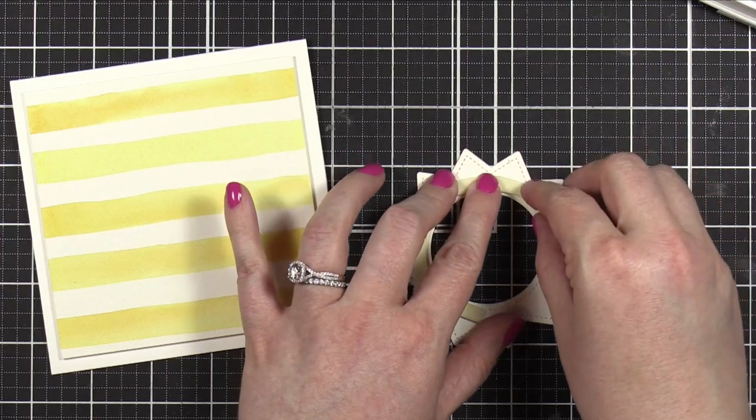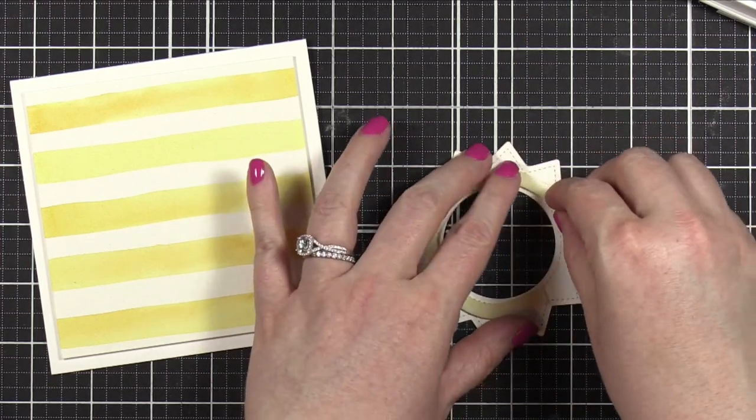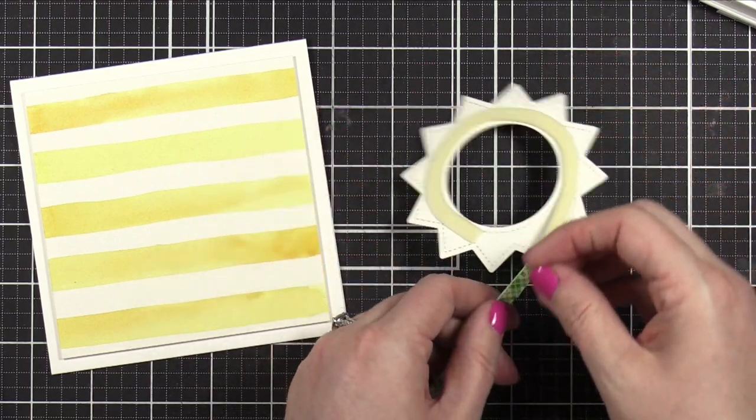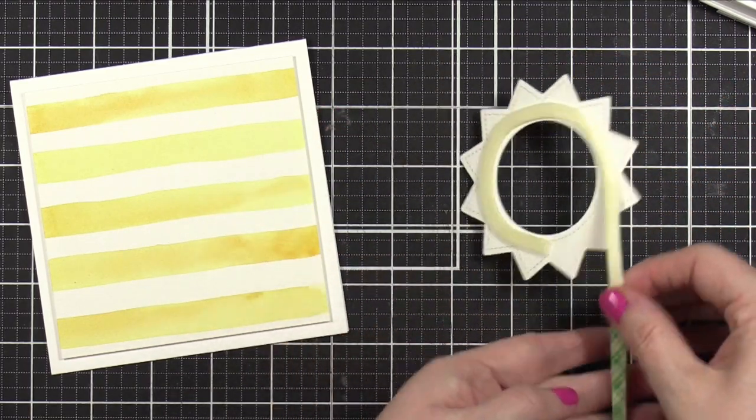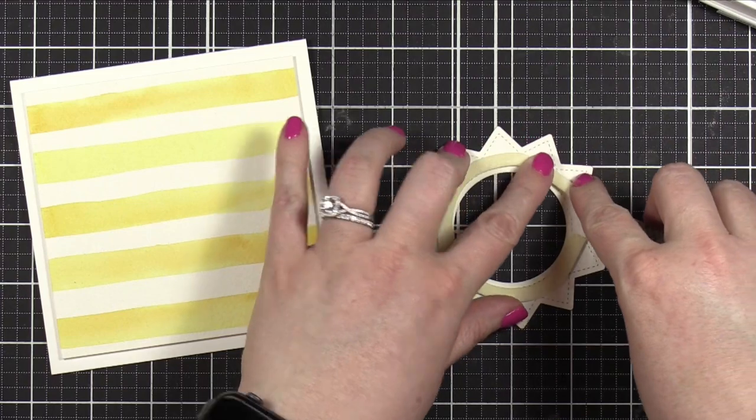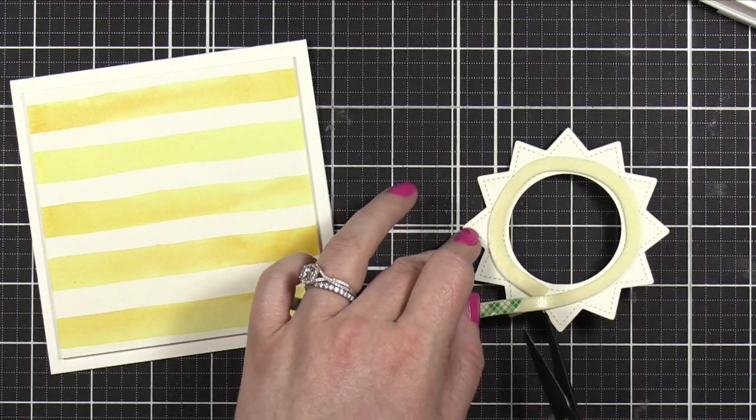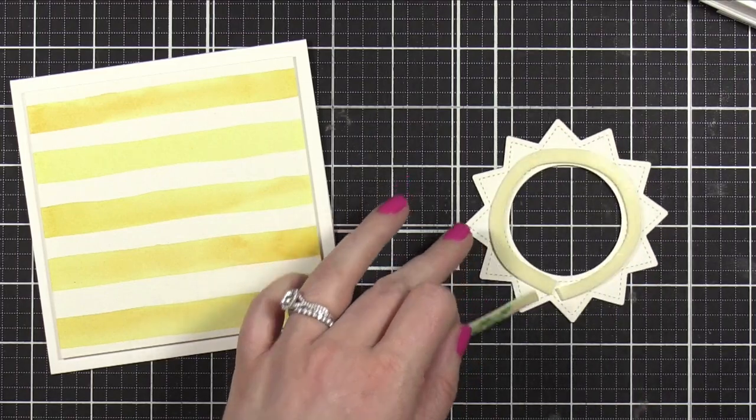Now, if you wanted to make this card into a shaker card, this would be an excellent time to first adhere that window sheet or acetate, and then put the foam adhesive down and build your shaker area. I'm not doing a shaker today, but this die would be perfect for a really fun shaker card.